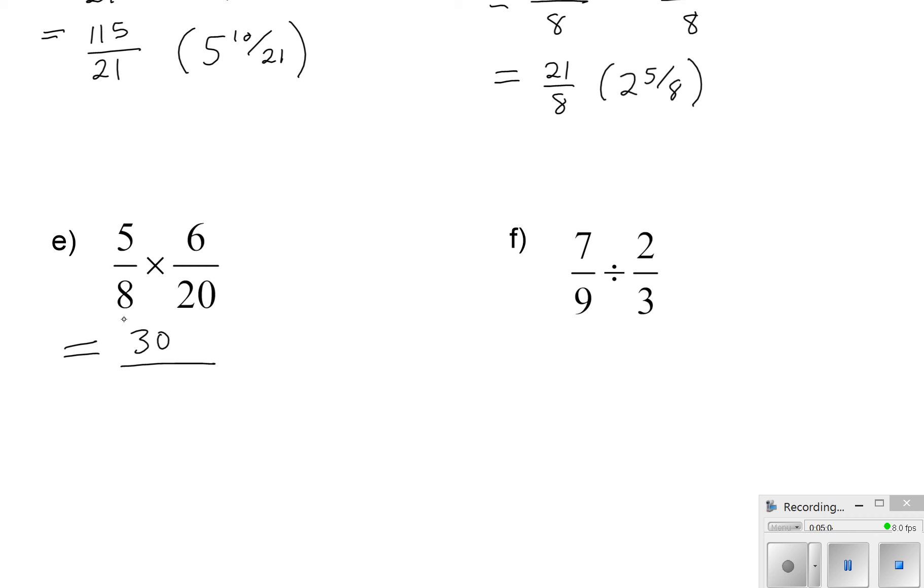So 5 times 6 is 30, and multiply the denominators. 8 times 20 is 160. And then don't forget to simplify. So 10 goes into both of those. 10 goes into 30 three times, and 10 goes into 160 16 times. There is something else you can do when you're multiplying that involves something called cancellation, and that we're going to spend a little bit more time in class talking about. So stay tuned if you're interested in that.